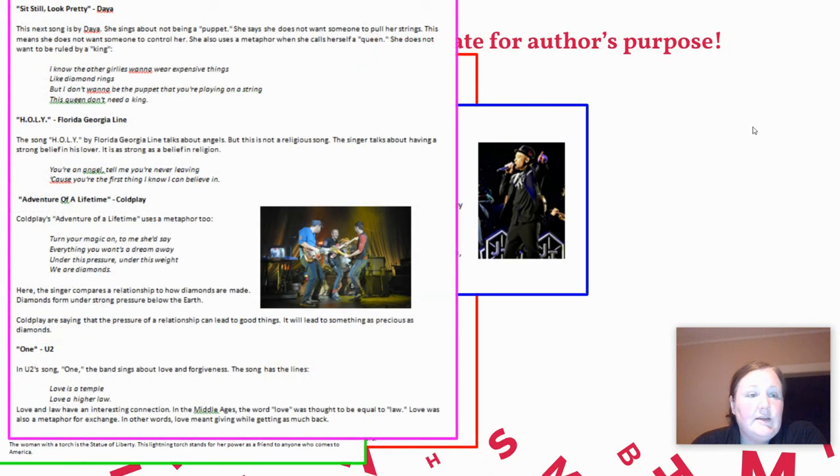Sit Still, Look Pretty, Daya. This next song is by Daya. She sings about not being a puppet. She says she does not want someone to pull her strings. This means she does not want someone to control her. She also uses a metaphor when she calls herself a queen. She does not want to be ruled by a king. I know the other girlies want to wear expensive things like diamond rings, but I don't want to be the puppet that you're playing on a string. This queen don't need a king.